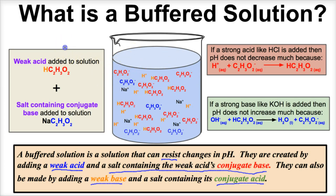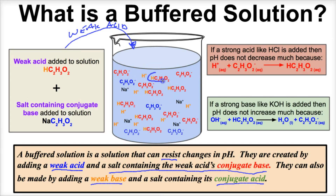Let's suppose we have a beaker of water and we're going to add a weak acid — acetic acid. If we add a weak acid like acetic acid to water, what ends up happening is that it does not ionize completely; it does not dissociate completely. Some of these molecules are going to stay together, and some of them are going to break apart into C2H3O2- ions and H+ ions. So we're going to have some hydrogen ions and some C2H3O2- ions.